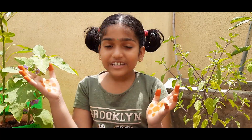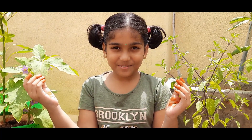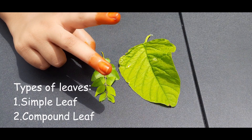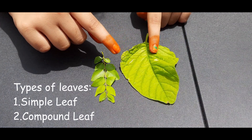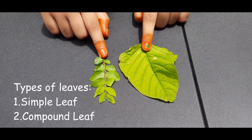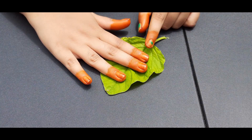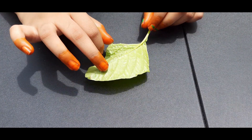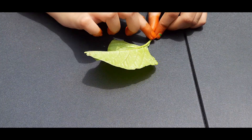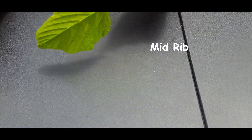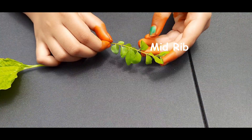Hi friends, today let me show you about different types of leaves. Basically there are two types of leaves: simple leaf and compound leaf. Now let's look at the simple leaf. This is the mid-rib.